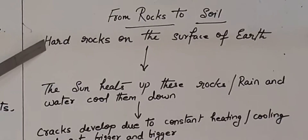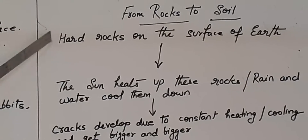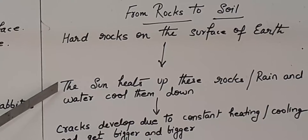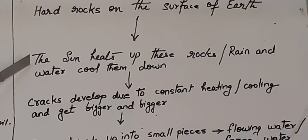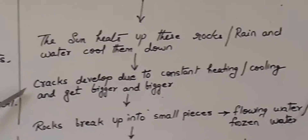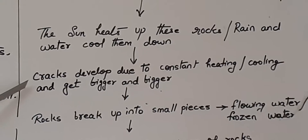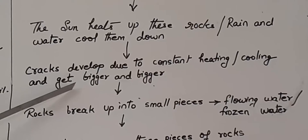Now we will study the formation of soil with the help of this flowchart. Long ago, there was no life on earth. The earth was covered with different kinds of rocks. Due to the heat of the sun, rocks get heated. Then water and cold weather cooled them down. This continued for a long time. Due to continuous heating and cooling of rocks, cracks developed on them which get bigger and bigger with time.